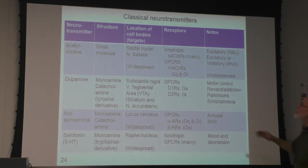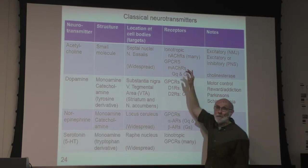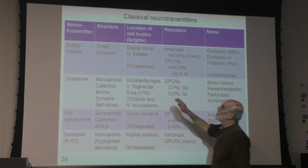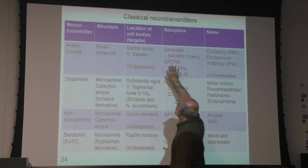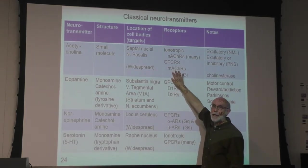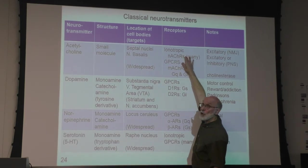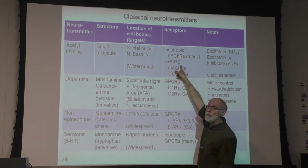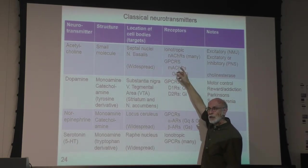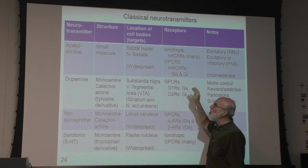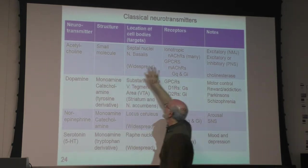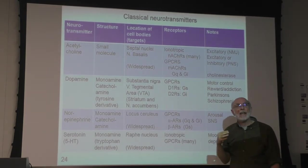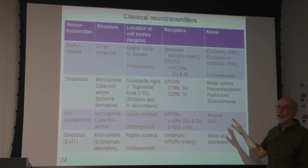I want you to understand the difference between ionotropic receptors and GPCRs, but I don't want you to memorize which neurotransmitters have which types of receptors — you can look that up. I want you to know the difference between an ionotropic nicotinic acetylcholine receptor and a GPCR acetylcholine receptor, but you don't need to know that acetylcholine has both types while dopamine only has GPCR receptors. That's a detail you don't need to memorize.